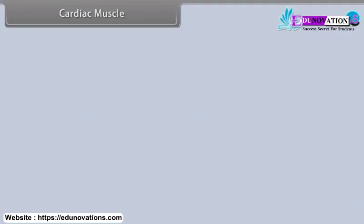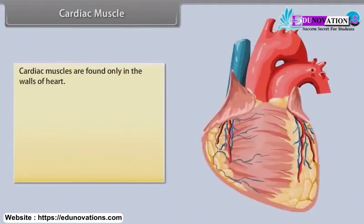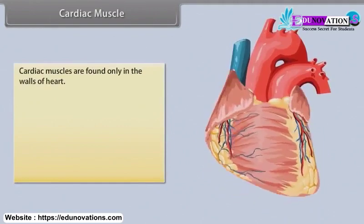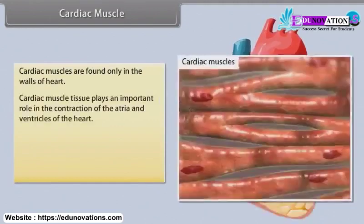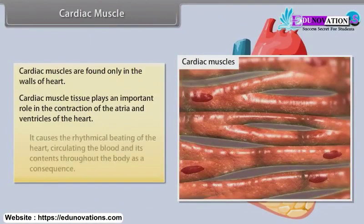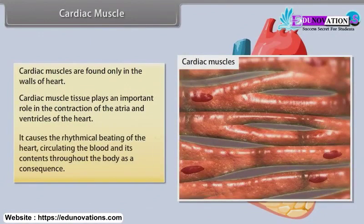Cardiac muscle. Cardiac muscles are found only in the walls of the heart. Cardiac muscle tissue plays an important role in the contraction of the atria and ventricles of the heart. It causes the rhythmical beating of the heart, circulating the blood and its contents throughout the body.